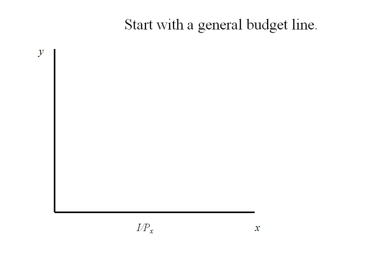Let's start with the general budget line. Now remember, we're going to intersect the X-axis at the point where income is divided by the price of X. That's the maximum amount of X we can purchase.